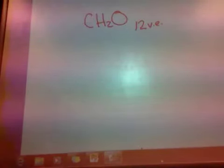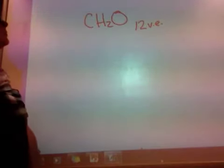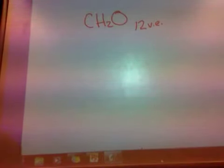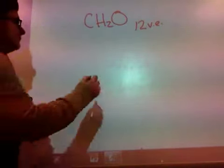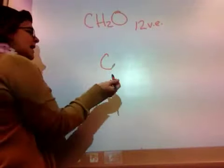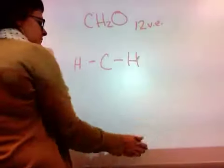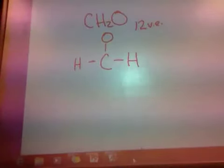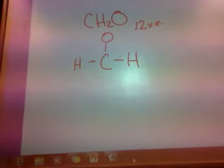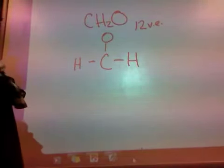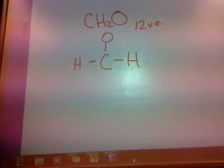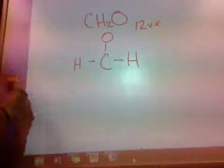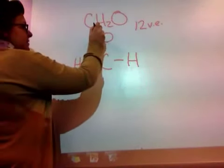So I have 12 valence electrons. Now I need to pick my central atom. Hydrogen can't be the central atom, so that leaves carbon and oxygen. Oxygen is more electronegative — I want the least electronegative — so carbon it is. Carbon is surrounded by 2 hydrogen atoms and also by an oxygen. There's my structural formula. Now I want to make sure that all the surrounding atoms have all the electrons they need. The hydrogens are good, but this oxygen needs some help.